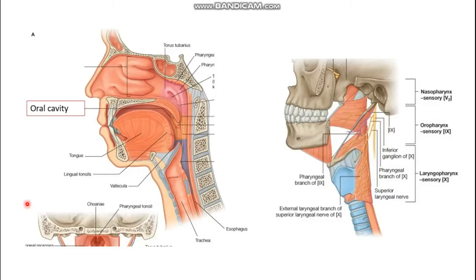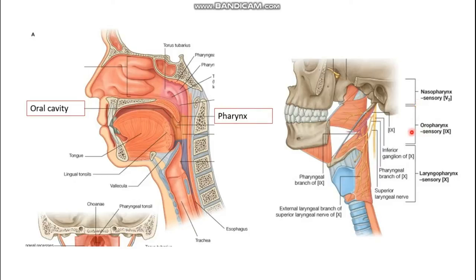The gastrointestinal tract starts from the oral cavity, which is the first part, and ends at the anal canal, which is the last part. The oral cavity opens posteriorly into the muscular tube which is the second part of the gastrointestinal tract, called the pharynx. The pharynx is divided into three parts: the first part is the nasopharynx, the second part is the oropharynx.